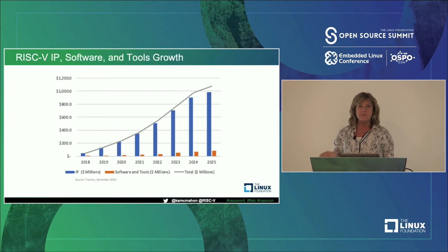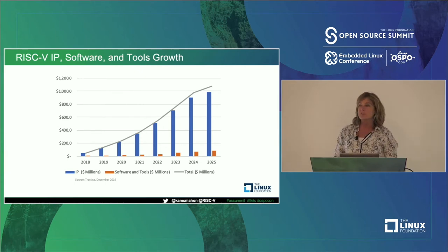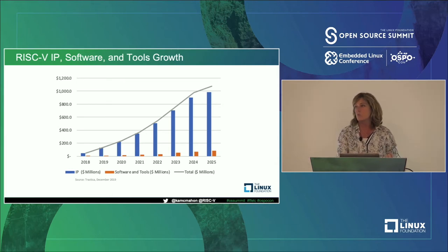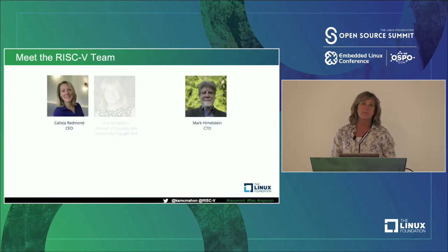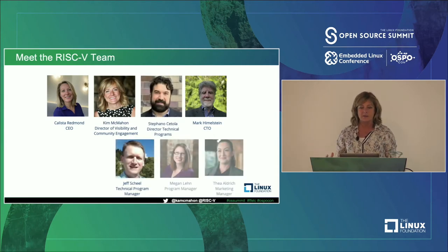On top of hardware, you need software. The software ecosystem is expected to grow to over a billion dollars in this same time period — people writing software applications and extensions to work on RISC-V. I showed you these numbers to set the stage for how we are expanding.